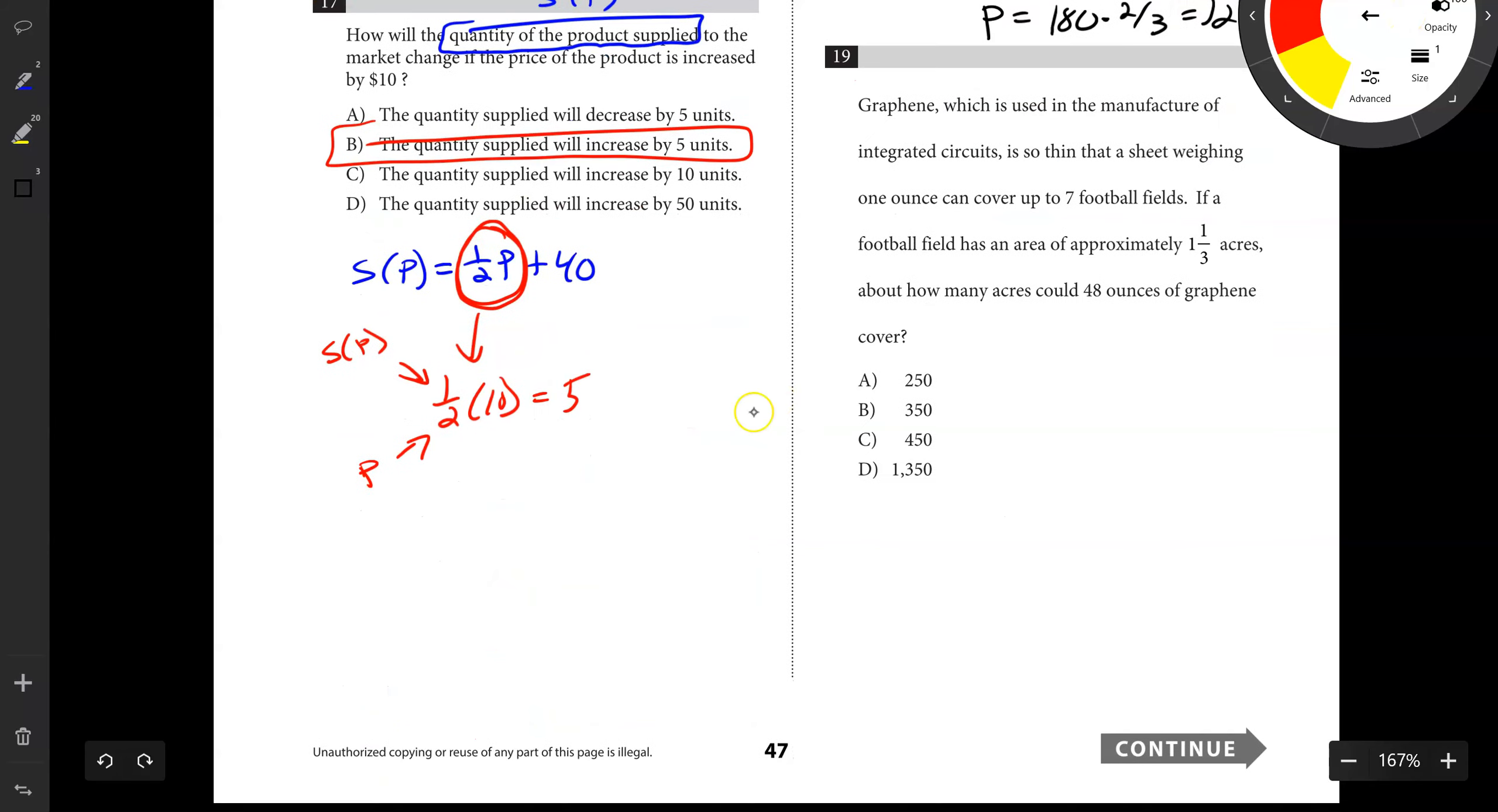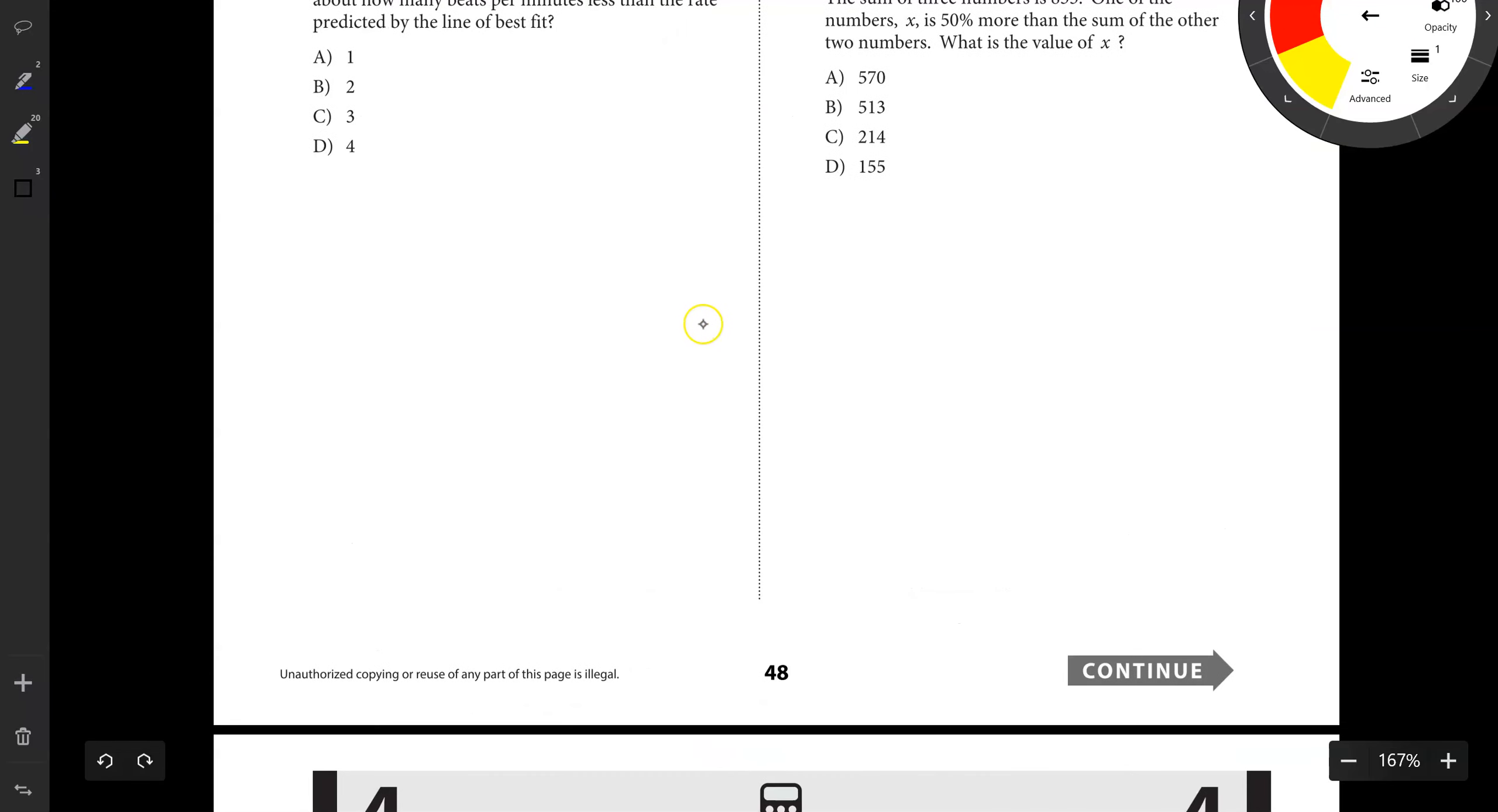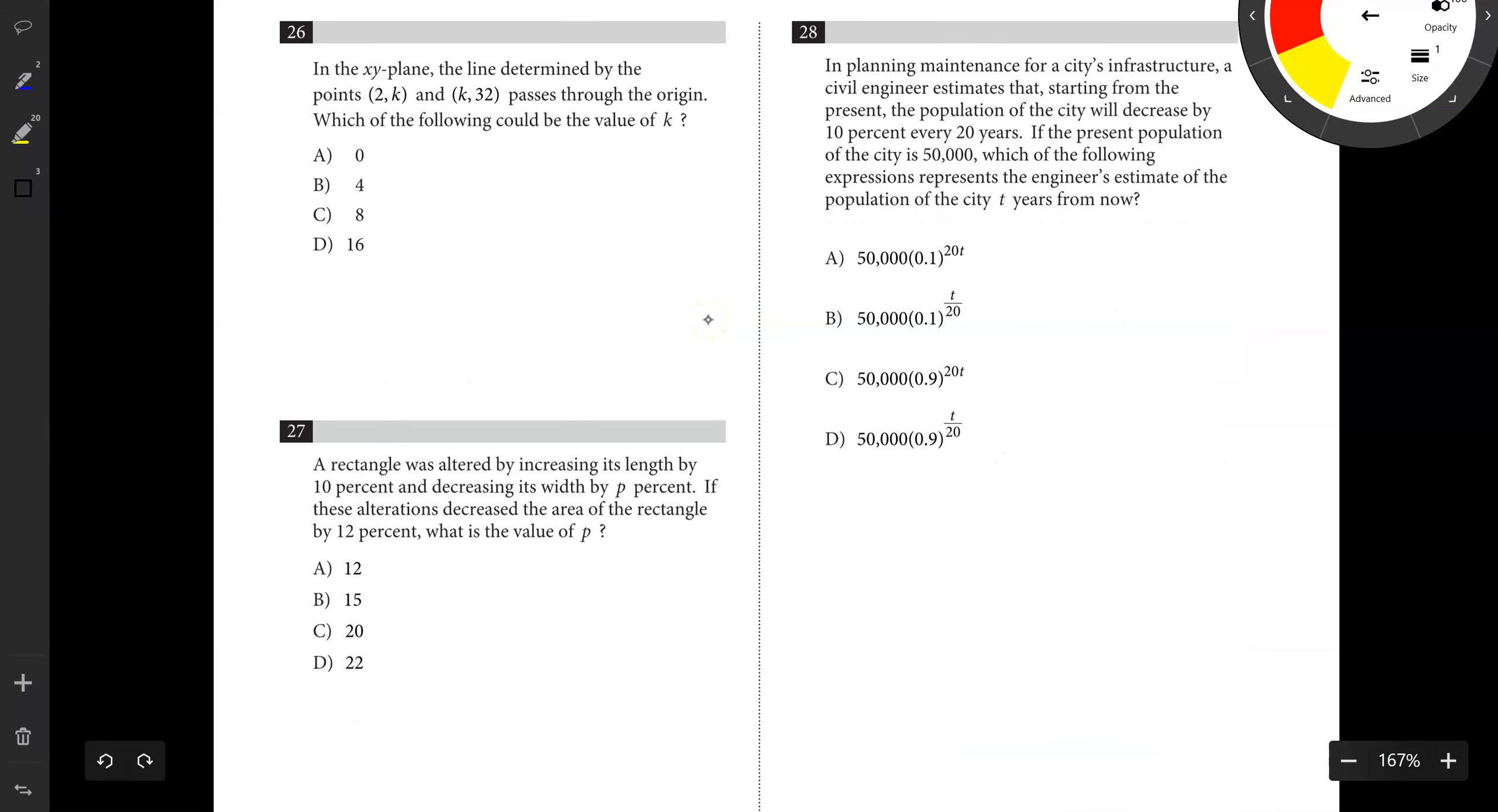Next up, we're going to move on to number 26. It says, in the XY plane, the line determined by the points 2 comma K and K comma 32 passes through the origin. Which of the following could be K?